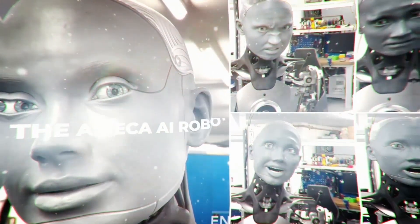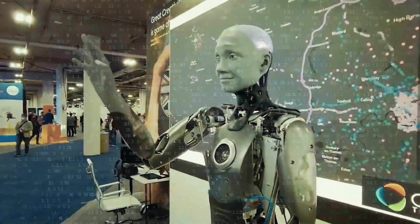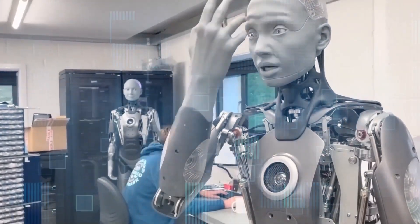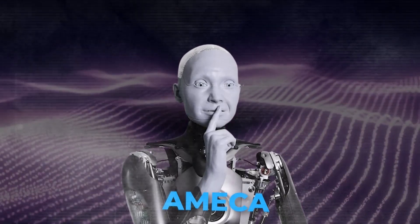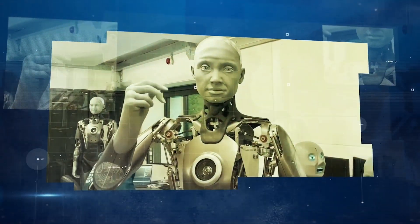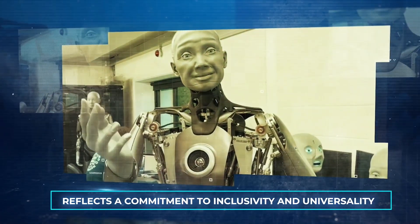The Ameca AI Robot, a remarkable creation by Engineered Arts, stands as a cutting-edge marvel in the realm of robotics, crafted to replicate human expressions and movements. Ameca's appearance is meticulously designed to be gender and race neutral, featuring a gray rubber face and hands. This deliberate aesthetic choice reflects a commitment to inclusivity and universality.